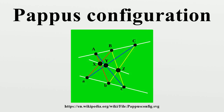In geometry, the Pappus configuration is a configuration of nine points and nine lines in the Euclidean plane, with three points per line and three lines through each point. It is named after Pappus of Alexandria.